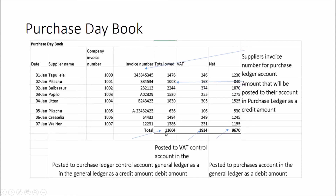Although the total amount being paid to the supplier is £11,604, we're going to get the VAT back from HM Revenue and Customs. So it's only the net amount that's going to be deducted from the amounts owed to shareholders, and that's the net purchase amount.